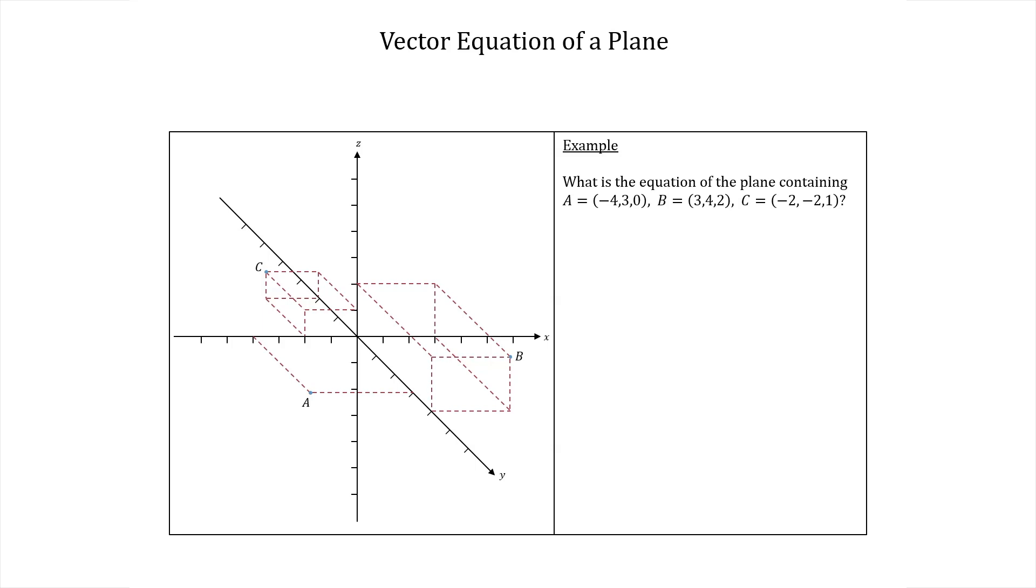Okay, so now that we understand where a, b, and c are relative to the axes, let's clear some of the clutter from this diagram. Now to answer this question, what information do we need? Well, we'll need a vector normal to the plane we're wanting to describe.